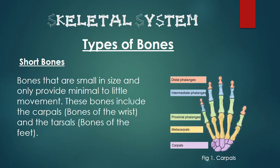The first type of bone is the short bone. These bones tend to be small in size and only provide minimal to little movement. These bones include, but are not limited to, the carpals and the tarsals.